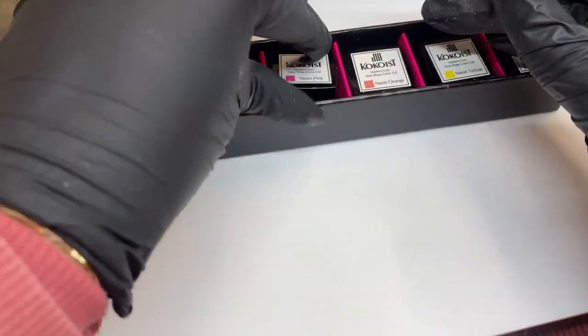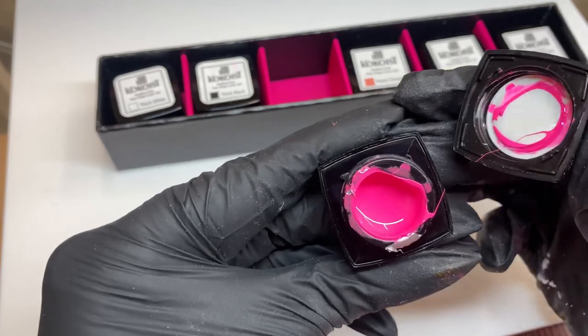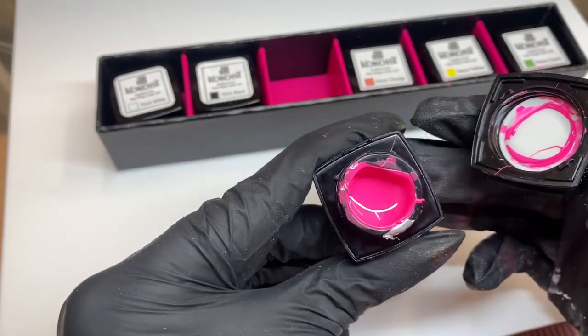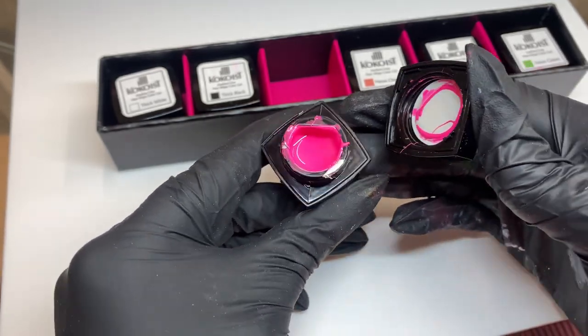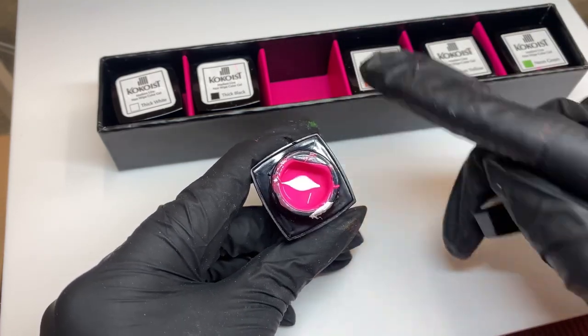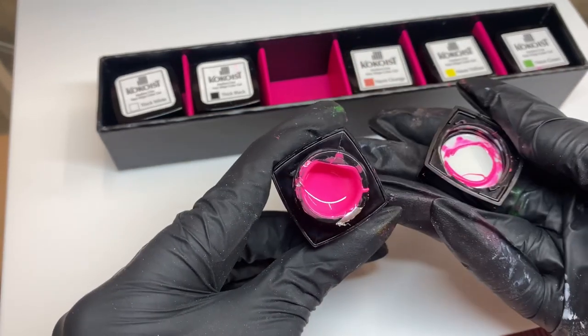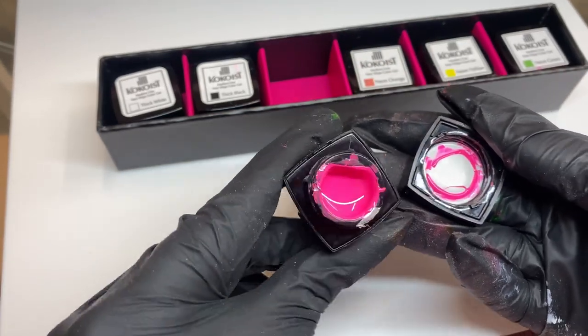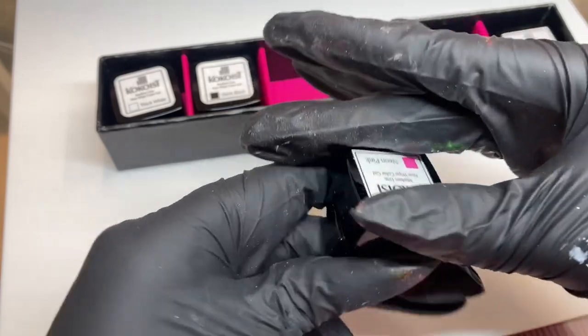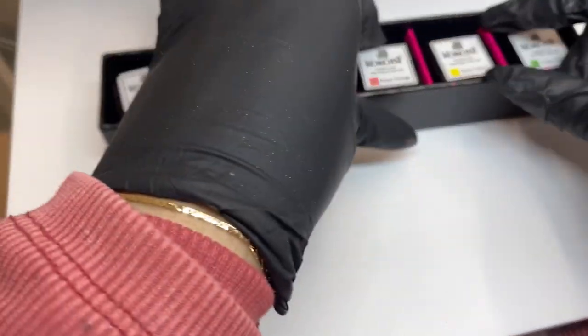Now we're starting to get into the colors, so the first color up is this neon pink. It's a stunning, stunning shade of pink. In the jar it looks similar to the container, but it's actually more of a brighter pink. I love it. I think it's perfect for the season that we are approaching because everyone loves fun summer nails.